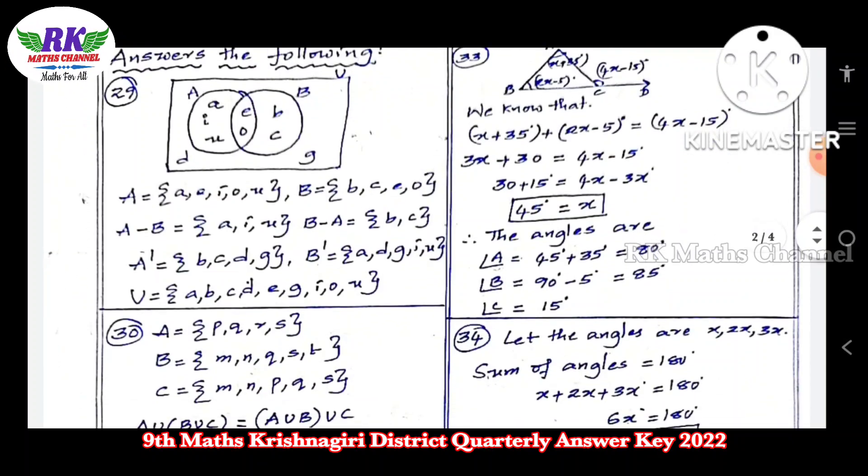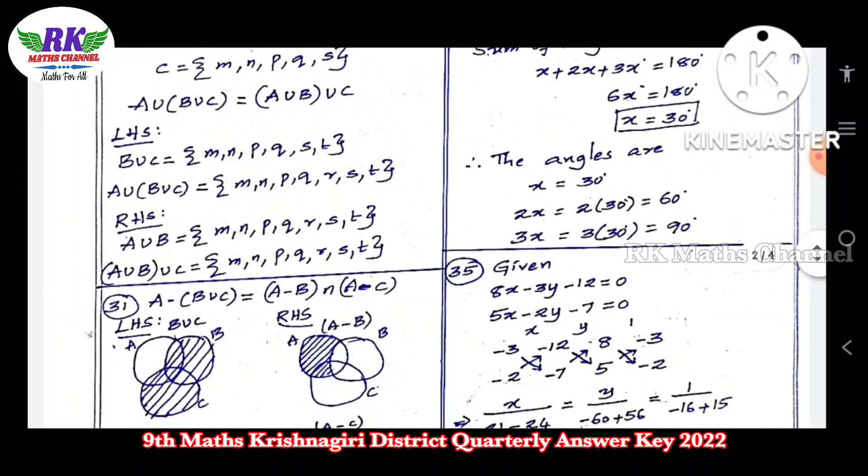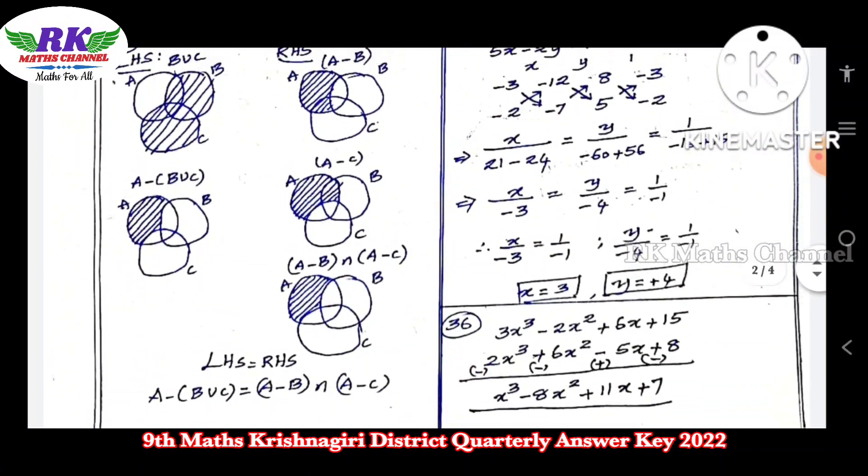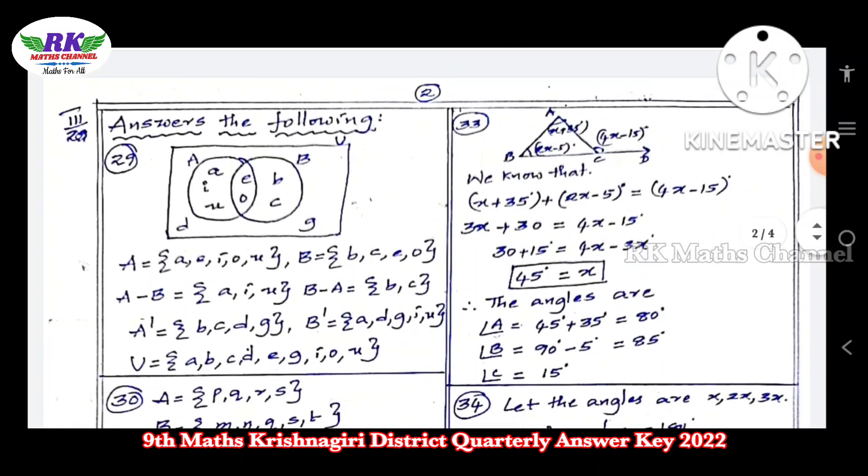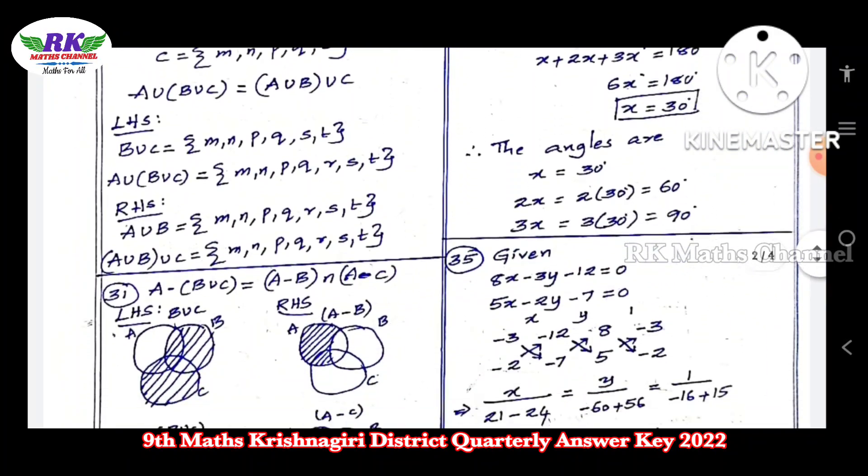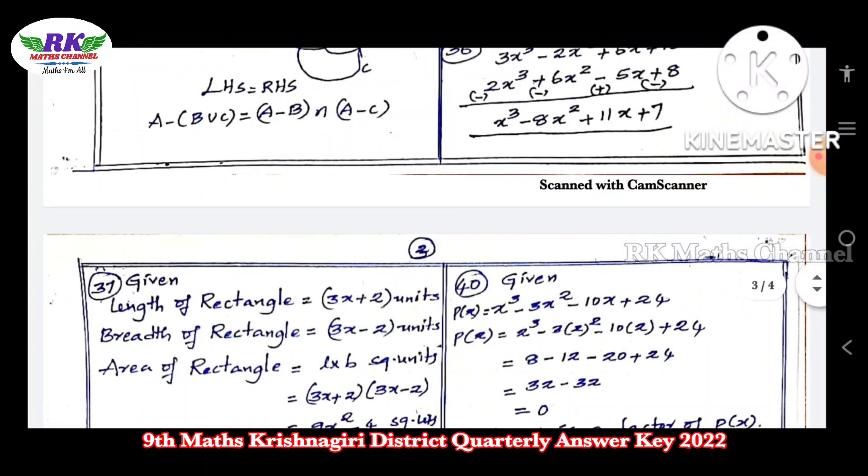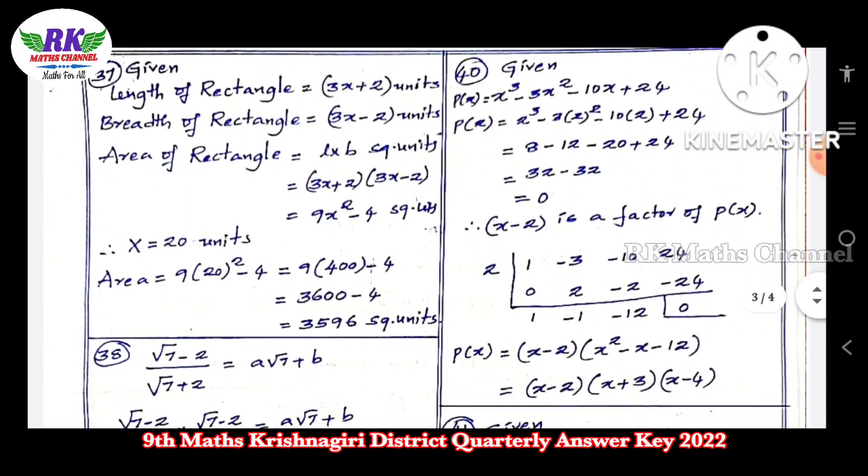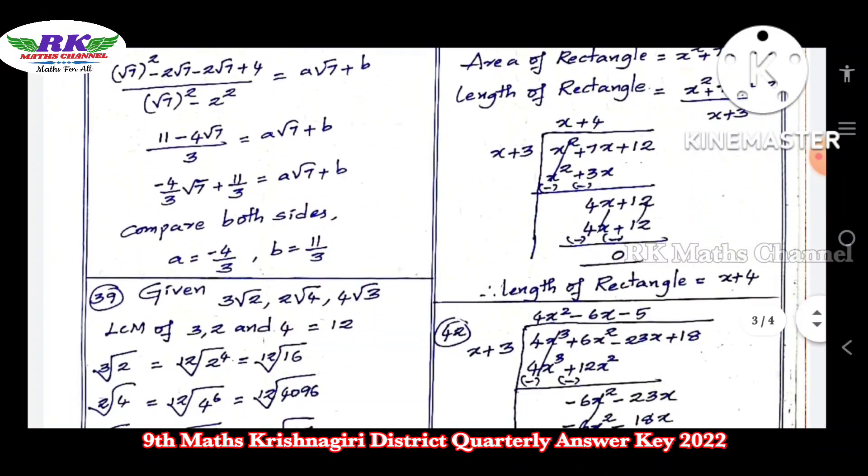Question number 29, question number 30, question number 31, question number 32, and question number 33. All these are 5 mark questions.